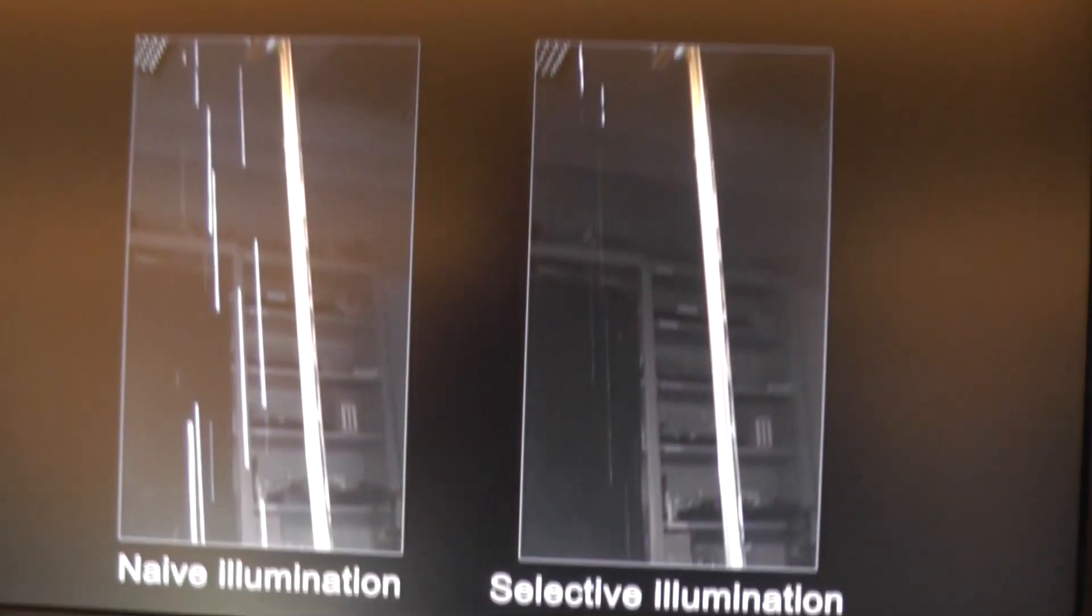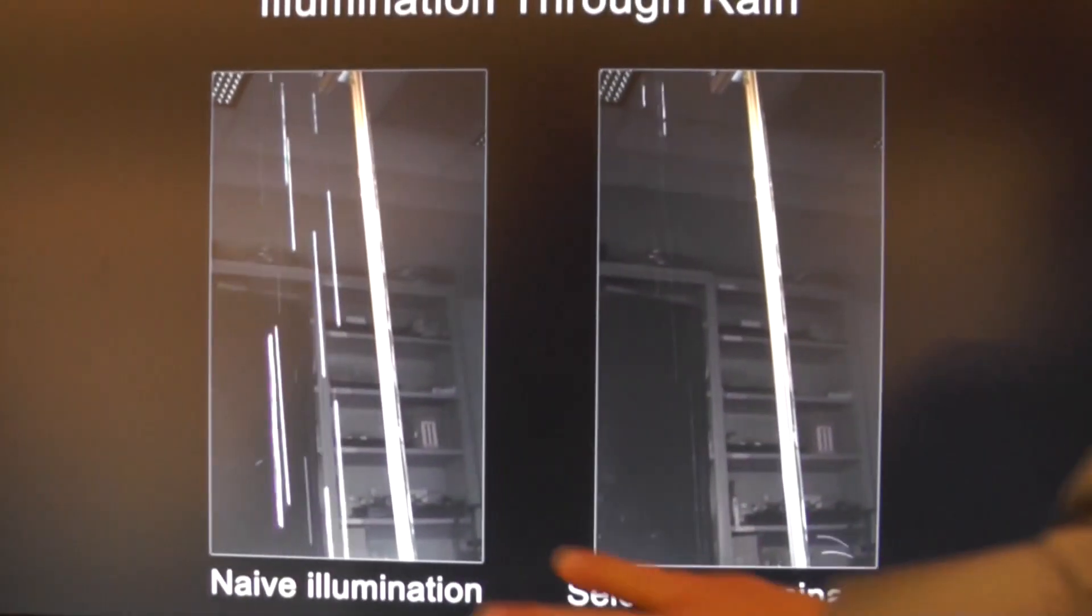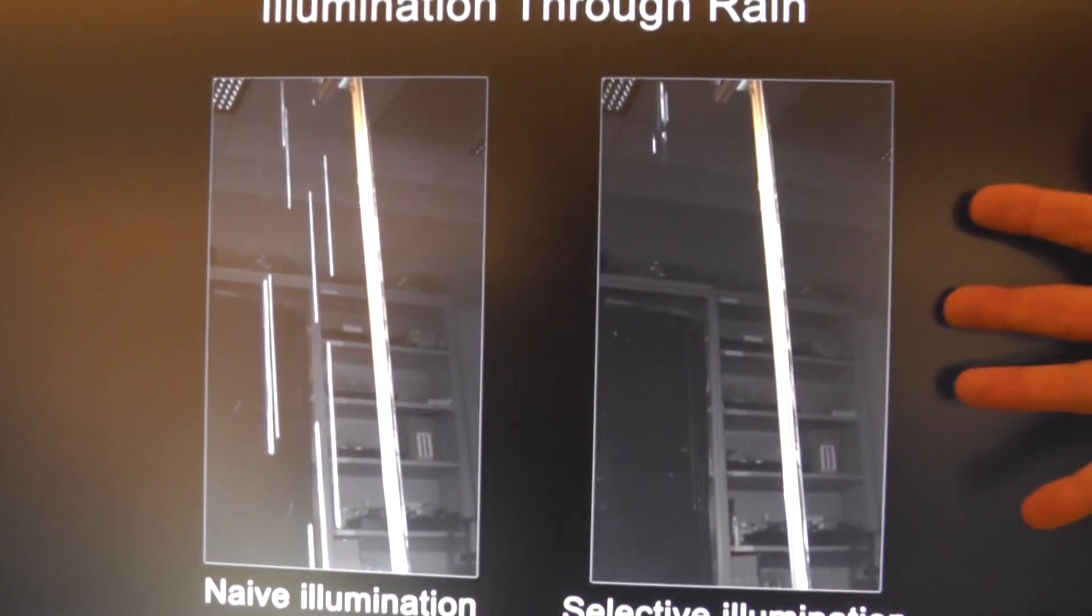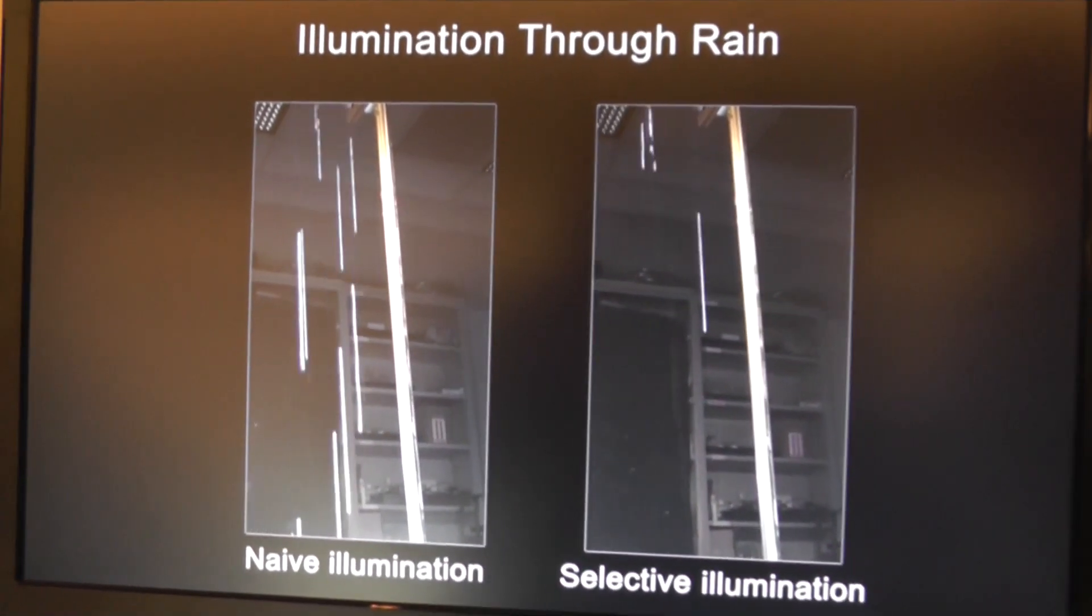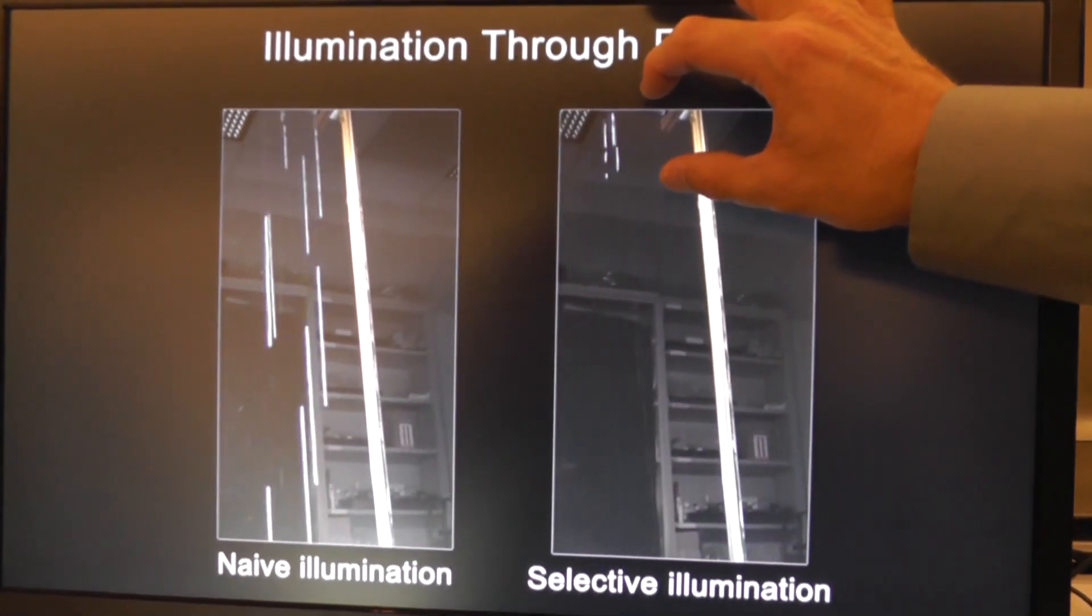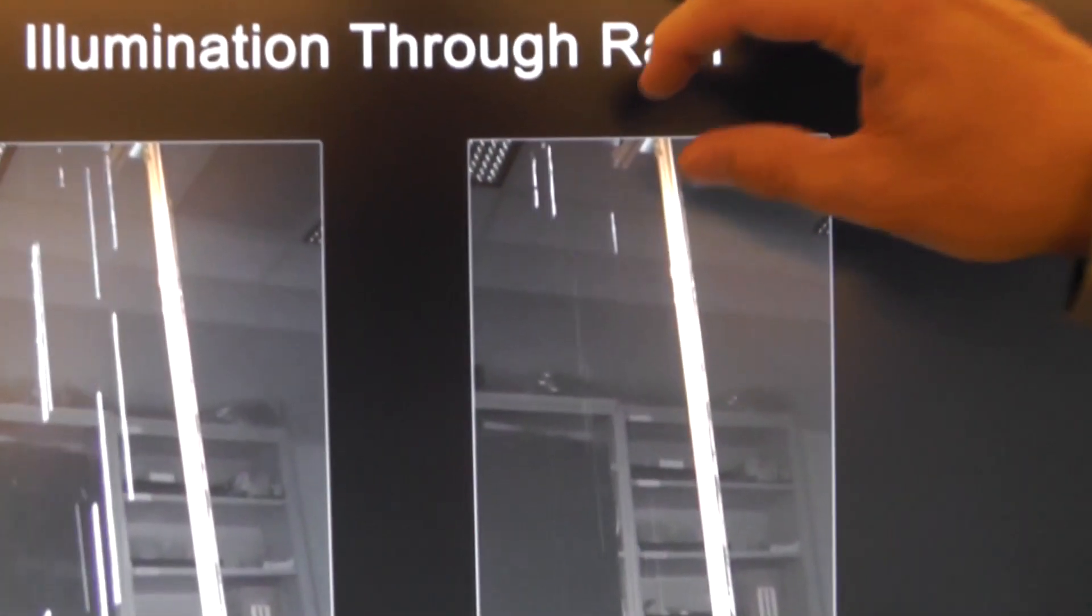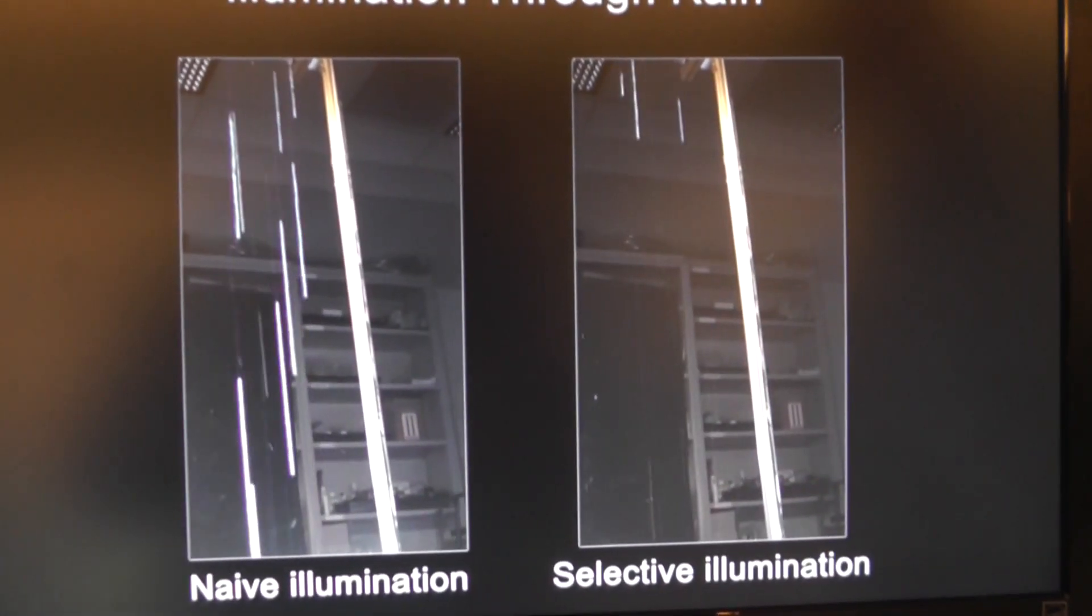Here's a video that shows what that looks like with the background that's illuminated. The rain is falling here. This is with the system having 100% illumination. Then this is what the system looks like when we activate it. You can see we still have that 13 milliseconds of time where we're working out the location of the raindrops. The visibility here is much improved over the video on the left.